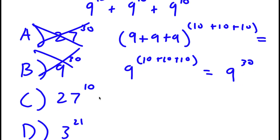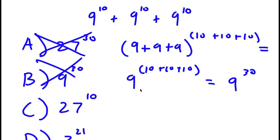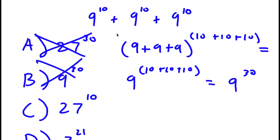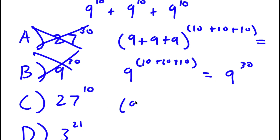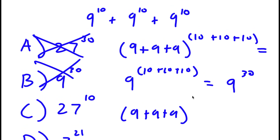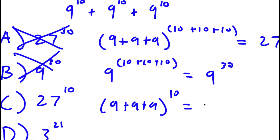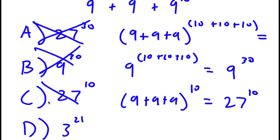For method C, you add the bases and keep the exponents the same: 9 plus 9 plus 9 to the power of 10, which is 27 to the power of 10. But this method is wrong as well — that's not the right way to add exponents.